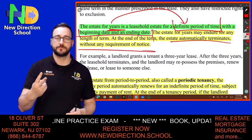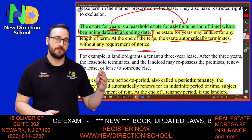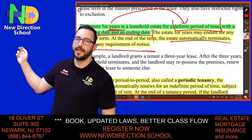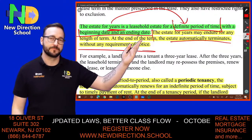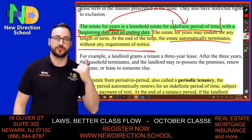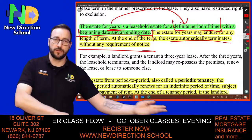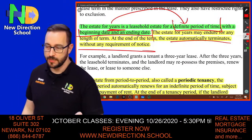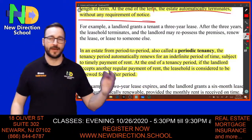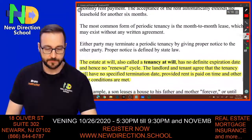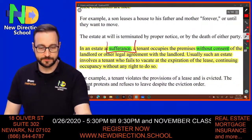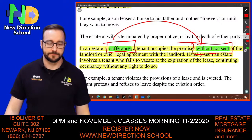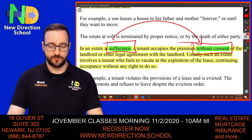In a periodic estate — period to period — it automatically renews as long as you make a timely payment of rent. Estate at sufferance: you're there without the landlord's consent; the landlord is suffering. We'll go over this in more detail in a dedicated chapter, but right now it's just an overview of what's out there.